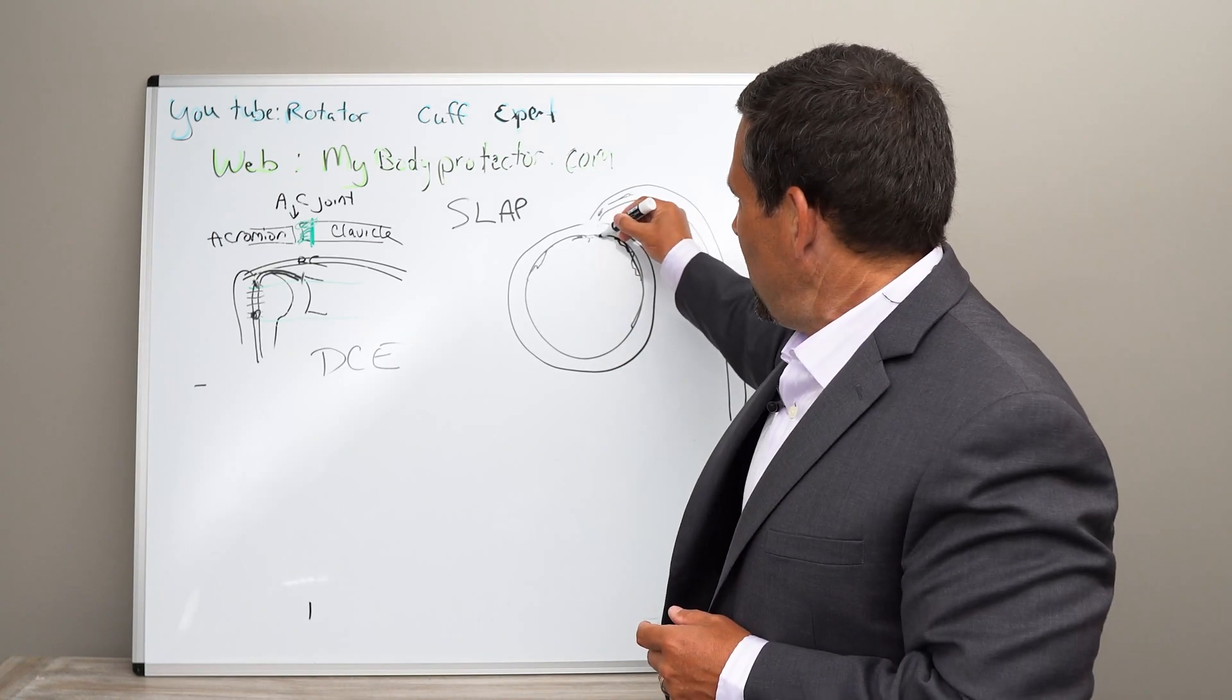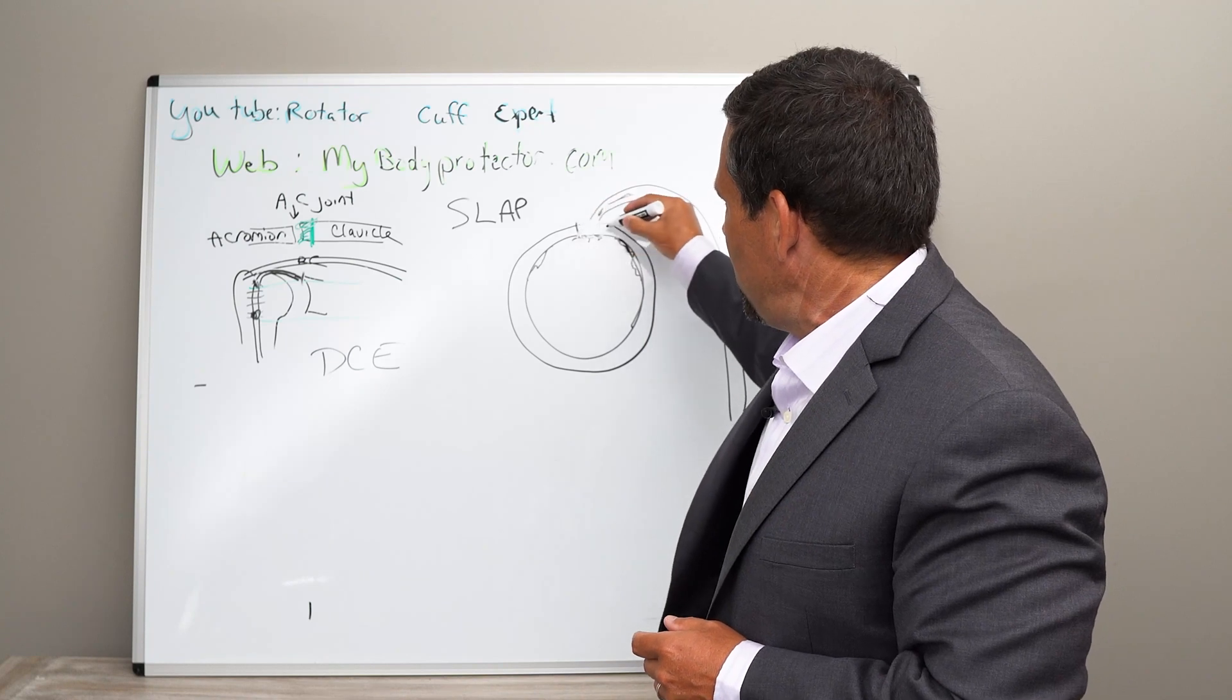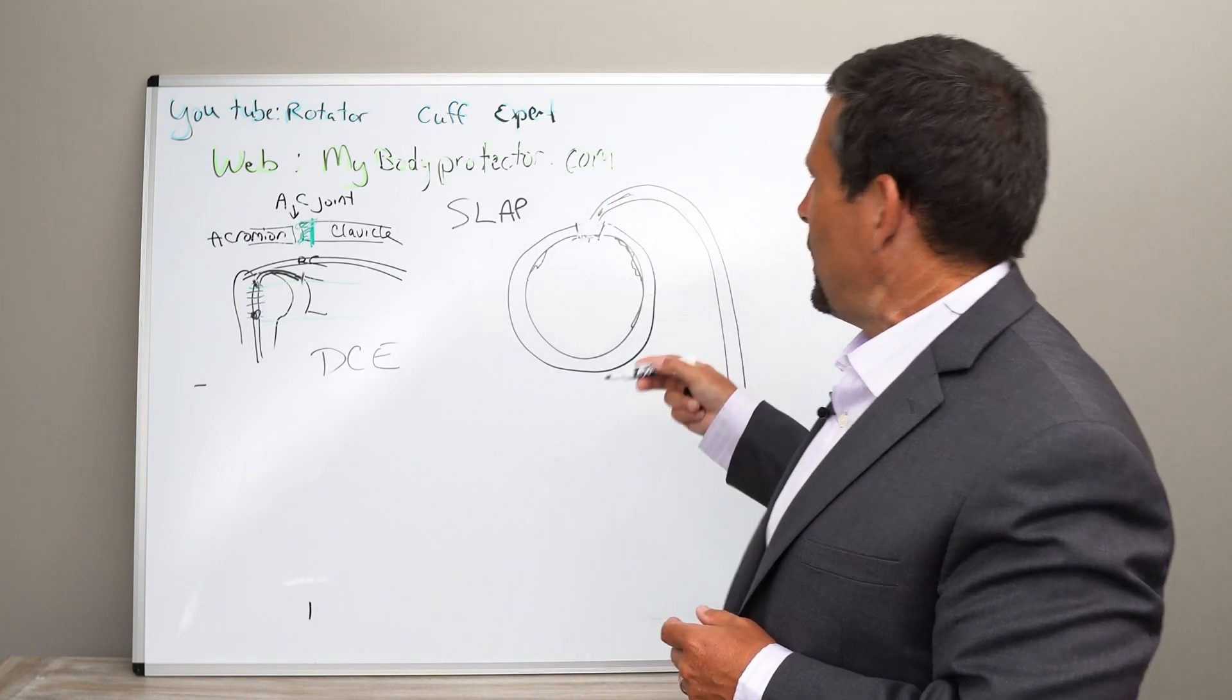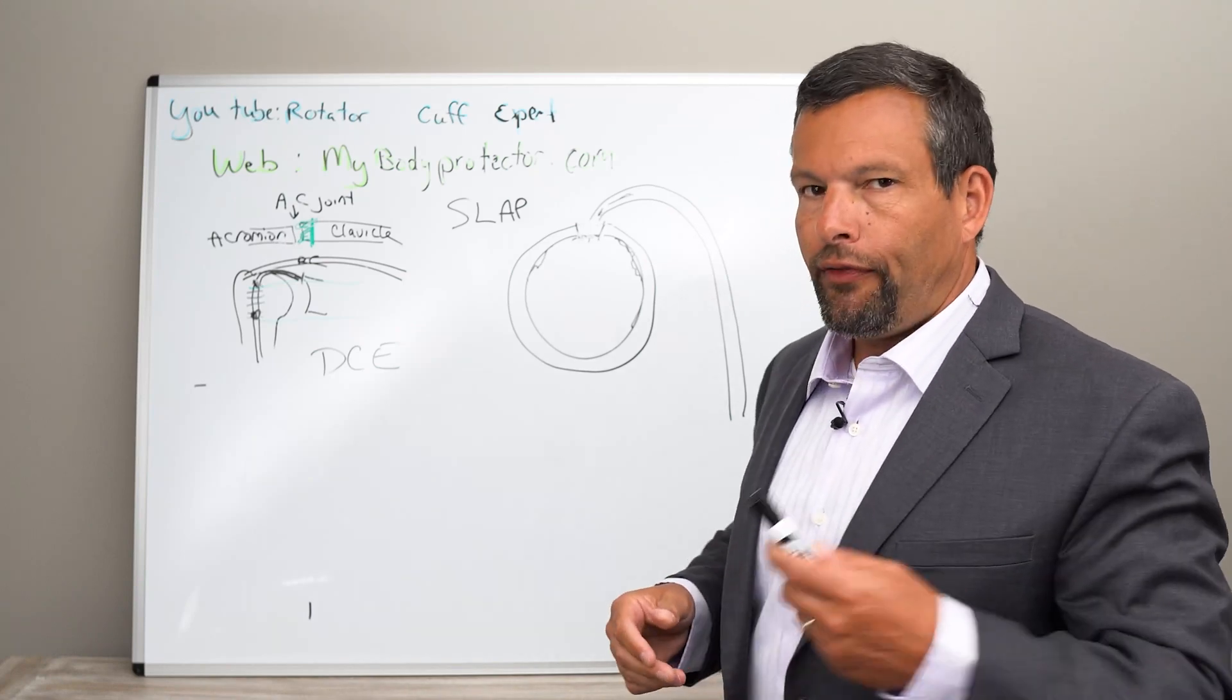So what we do is we put an anchor, one or two depending, and we reattach it on either side. So that would be a SLAP repair.